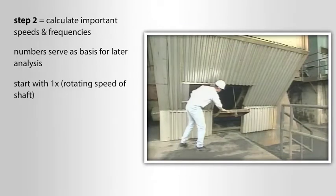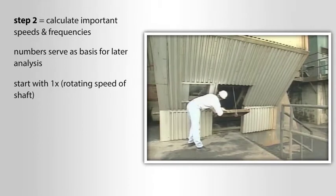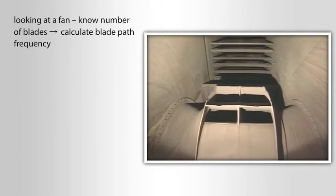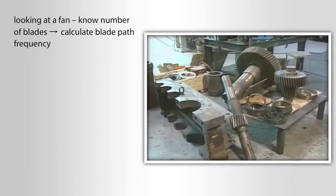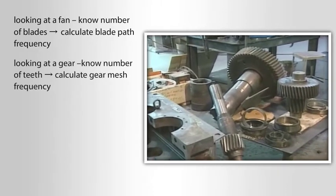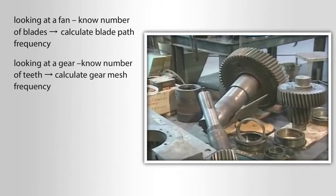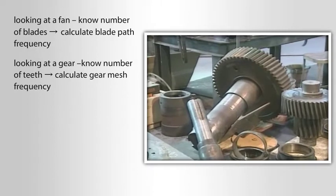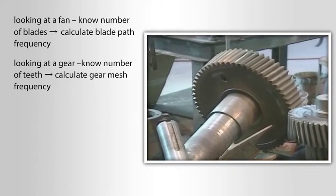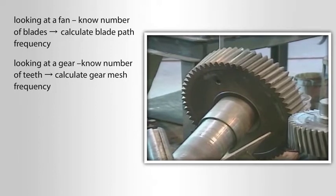We'll start with the one times or rotating speed of the shaft. Then if we're looking at a fan, we'll want to know the number of blades so we can calculate the blade path frequency. If you're looking at a gear, we'll want to know the number of teeth so we can calculate the gear mesh frequency and so on. We'll identify the important speeds and frequencies for each type of equipment as we proceed.